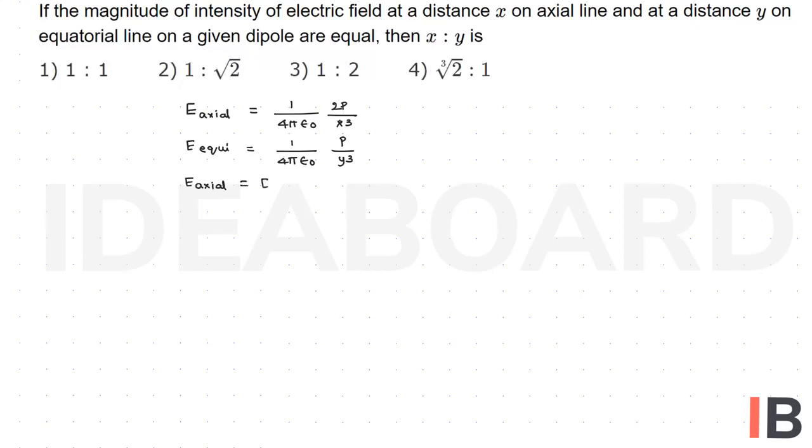But as per the question, they said the field along the axial line is equal to the field along the equatorial line. That is along the axial line: 1 by 4π epsilon naught, 2p by x cube, which is equal to 1 by 4π epsilon naught, p by y cube.